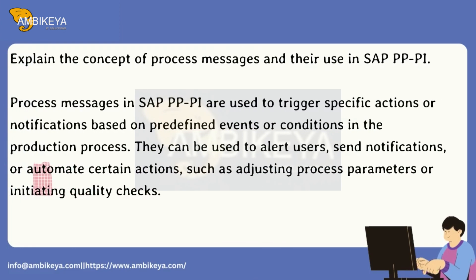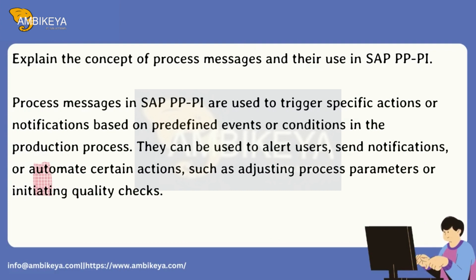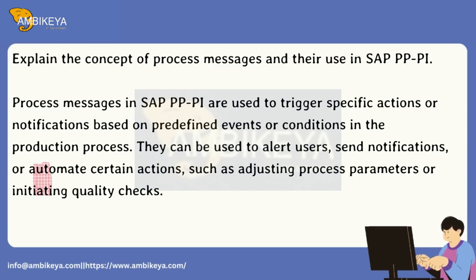Explain the concept of process messages and their use in SAP PP-PI. Process messages in SAP PP-PI are used to trigger specific actions or notifications based on predefined events or conditions in the production process. They can be used to alert users, send notifications, or automate certain actions, such as adjusting process parameters or initiating quality checks.